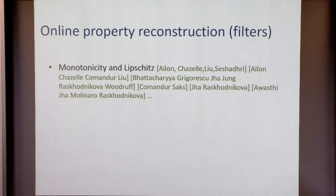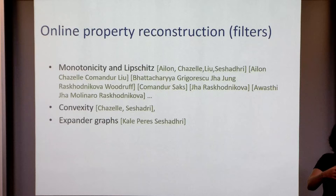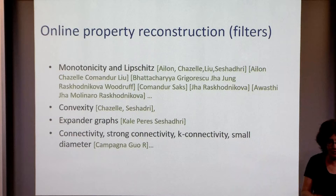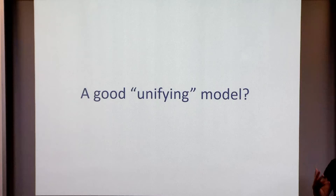There are a bunch of properties that can be reconstructed locally: monotonicity, Lipschitz conditions, convexity. For graphs, you can do corrections — you can turn a graph that had some edges broken back into an expander graph, make graphs that aren't quite connected into connected ones by adding just a few edges, all in a local manner without looking at the whole graph. There's also k-connectivity and small diameter. This motivates a good unifying model that captures all these different types of problems.